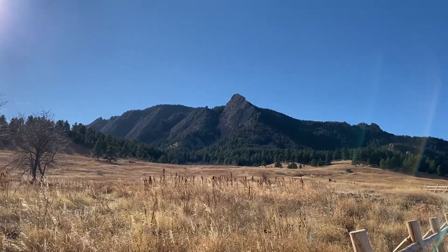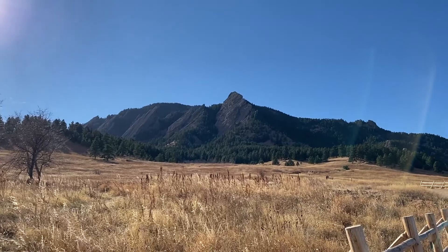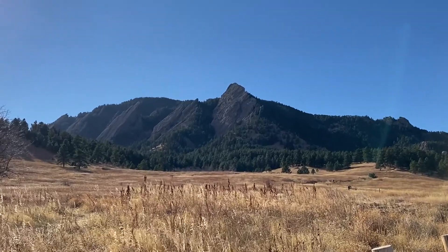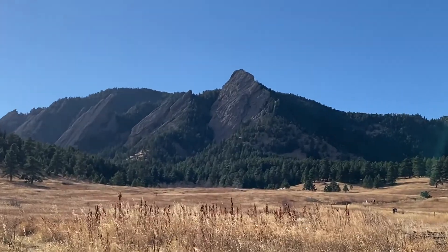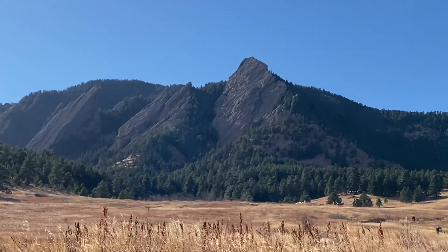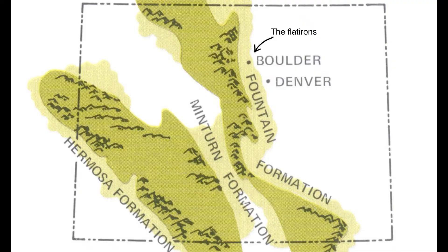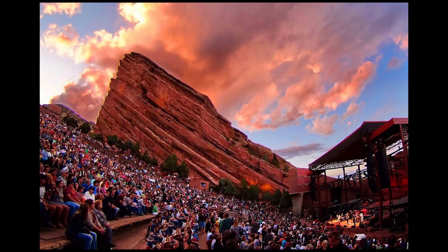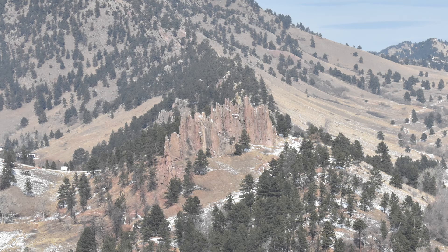The Flatirons are part of a much bigger, widespread rock formation called the Fountain Formation, which lies on the eastern edge of the Front Range and the western edge of the Denver Basin. Other notable landmarks where you can also see similar deposits in the Fountain Formation are Red Rocks Amphitheater in Morrison, Colorado, and the Red Rocks of Boulder, Colorado.